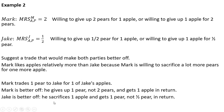Jake is also better off. He sacrifices one apple and gets back one full pear in return. Jake was willing to give up one apple for only half a pear, but with these trading terms he receives a full pear — so his utility increases. This is just one example; there would be many other trades that could make both parties better off.